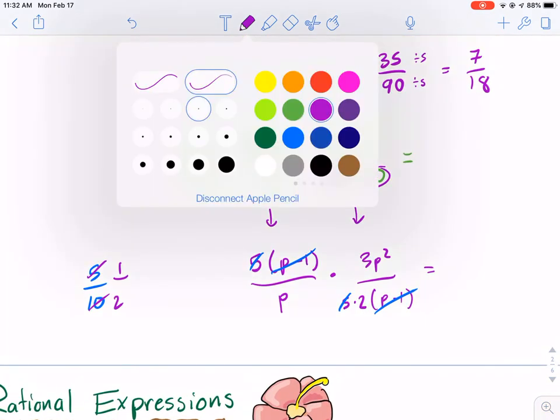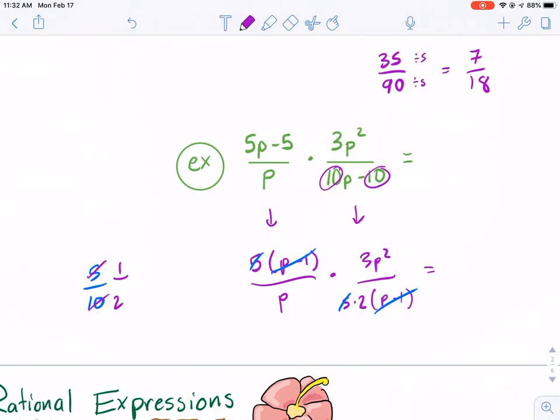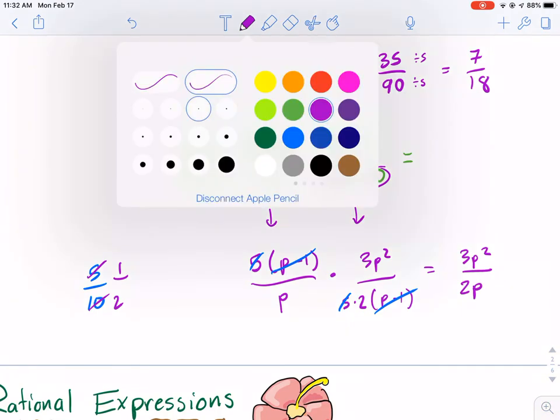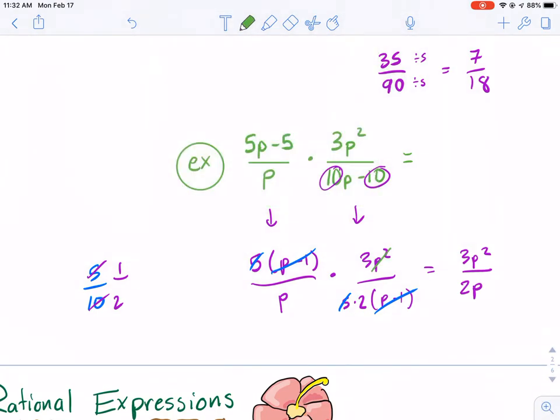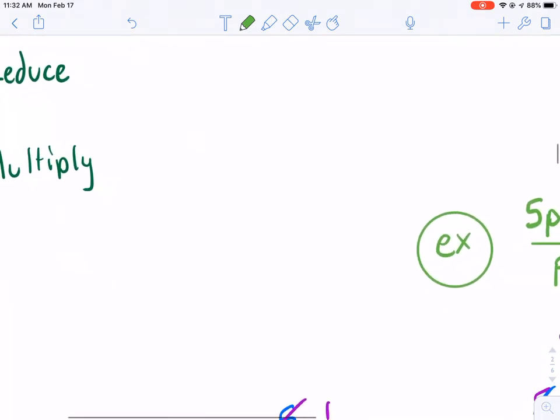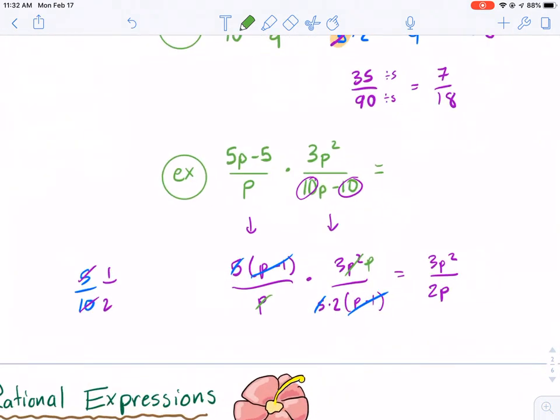Now, over here, we're going to write 3p squared over 2p. Again, if you're good with canceling and seeing that you can cancel the p squared with a p, leaving just the p in the top, that's fine. Otherwise, that's what this whole reduce step is. You can do that at the end after you multiply also. You can do it either before or after. It just kind of saves you work when you do it before.